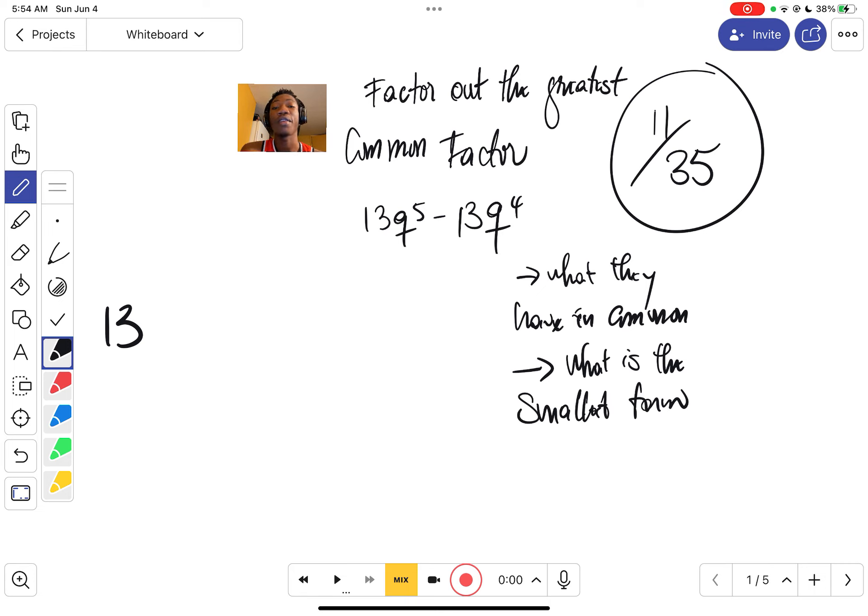But they have exponents. Which q are you going to take? You're going to take the smallest q. Take the smallest term because it's going to be much more easier for everyone when you factor. You'll have 5 over 4 and 4 over 4, which can be 1.